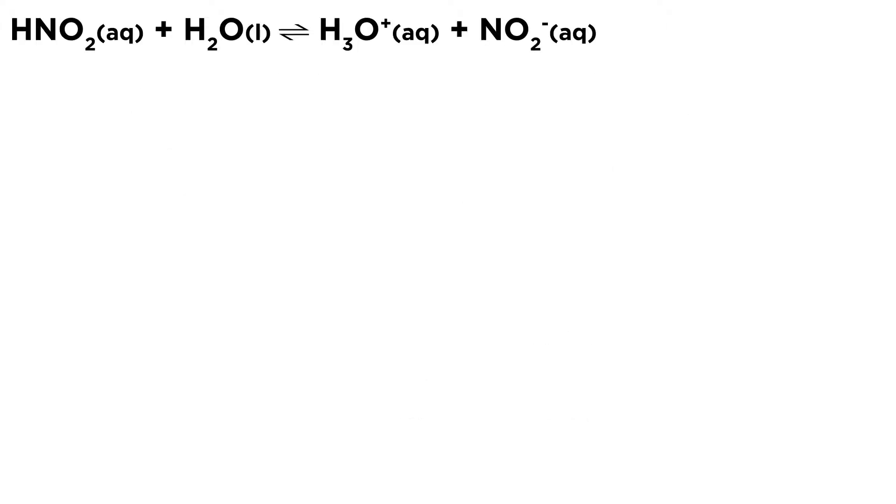Okay, let's write out our acid-base equilibrium. We have nitrous acid reacting with water to yield hydronium and the nitrite ion. So that is the equilibrium we are dealing with, and let's go ahead and write out the Ka expression. Just like any other equilibrium, that is going to involve the concentrations of the products over the concentrations of the reactants.